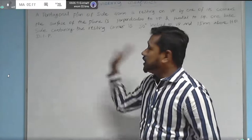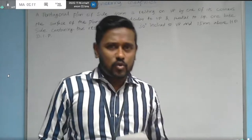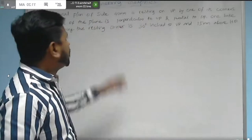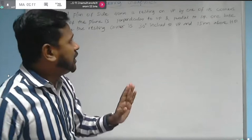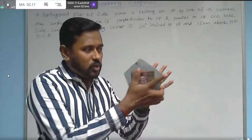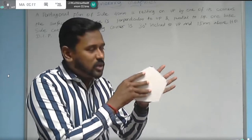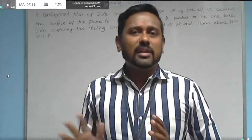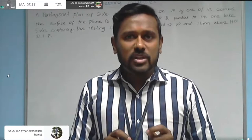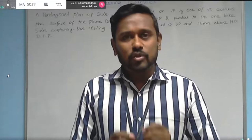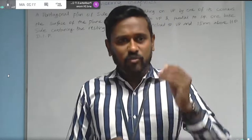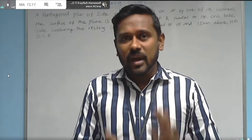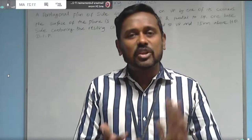In this question, a pentagonal plane of side 40 mm — its dimensions are given. To draw a pentagon, we need only the side length. If we are provided with the side length of a pentagon, we can draw it. So, 40 mm — it is resting on VP by one of its corners. Each and every word in the question is very important to visualize things in your imagination. You should not neglect any single word. Word by word you read, you have to create a visualized environment in your mind to get a better understanding of the actual environment.